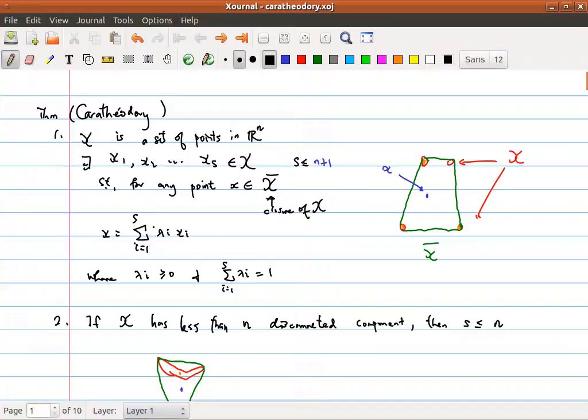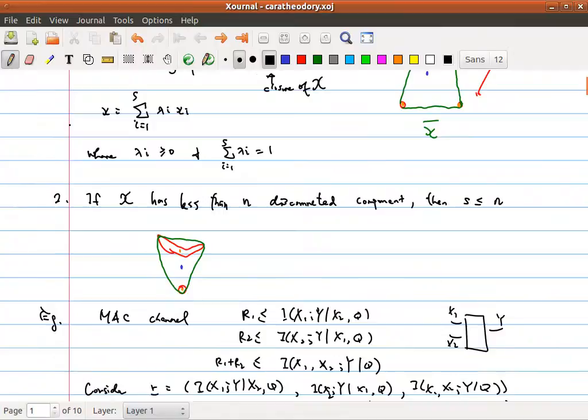Basically, we say it's a convex combination, it's just that x will be equal to sum of lambda_i x_i, where lambda_i is greater than or equal to 0, and sum of lambda_i is equal to 1. In the second form,